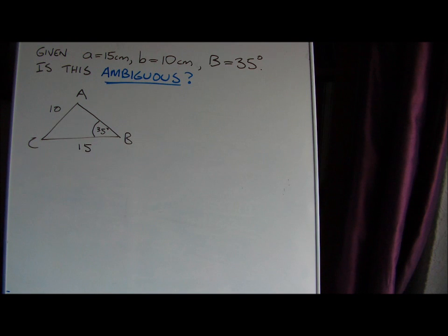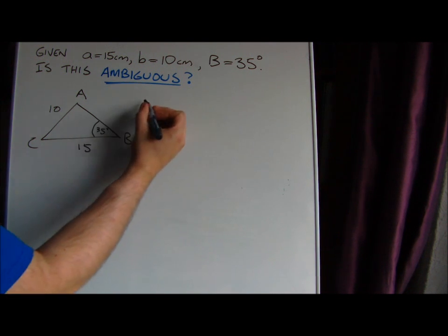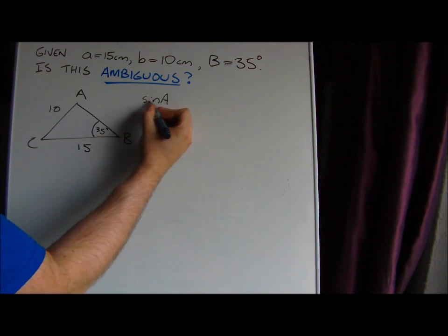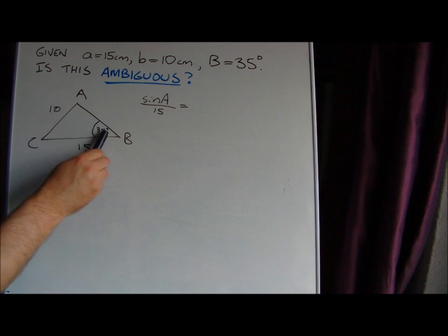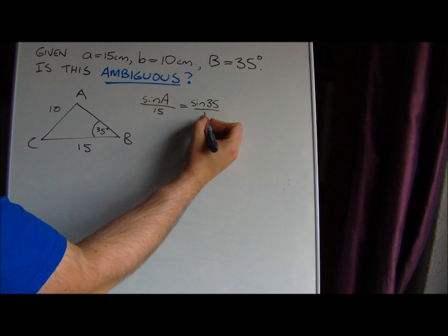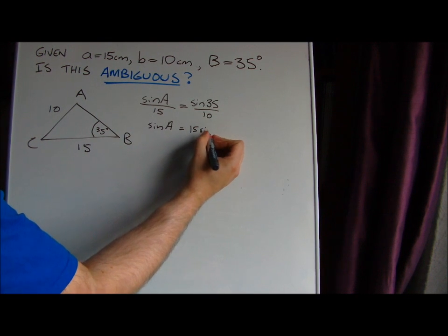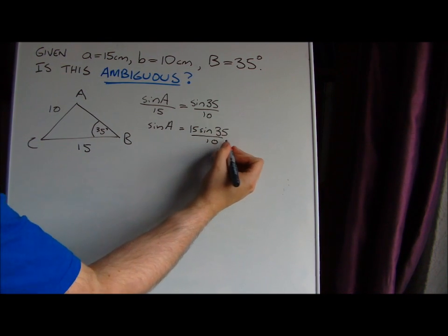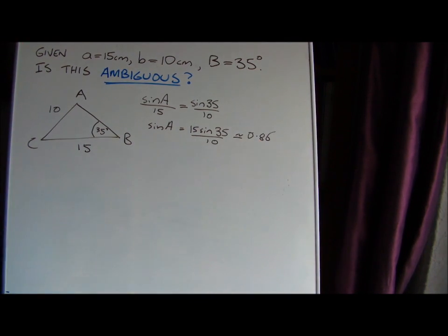We now have to calculate angle A or angle C. Using the sine rule, there's only one we can calculate at the moment, and that's angle A because it's opposite a given side. So we're writing down sine A over 15 equals sine 35 divided by 10. Rearranging, sine A equals 15 sine 35 over 10, which is approximately 0.86.